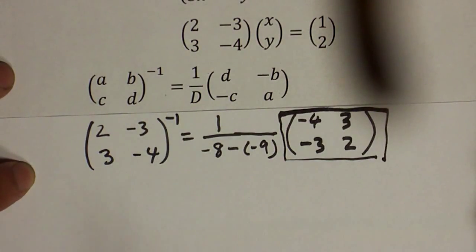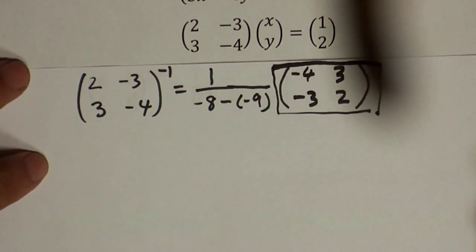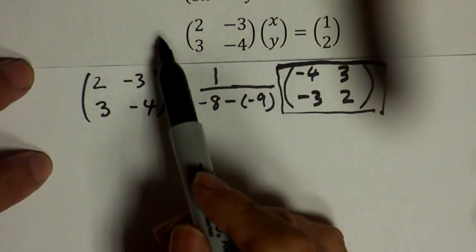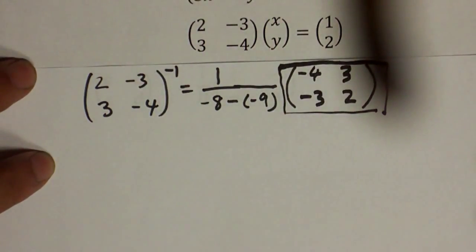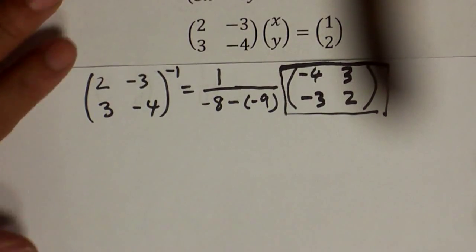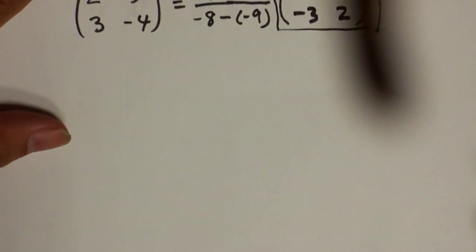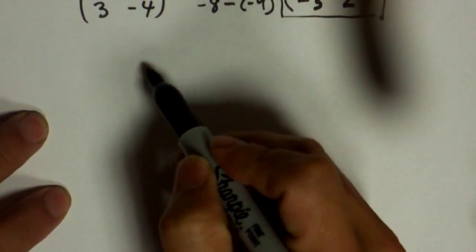We are going to take the original equation, and we are going to multiply this inverse to the left side of each. Let me write down what I mean.